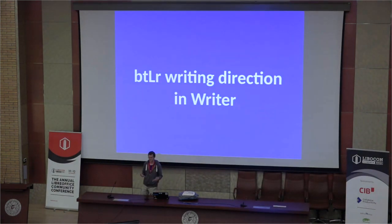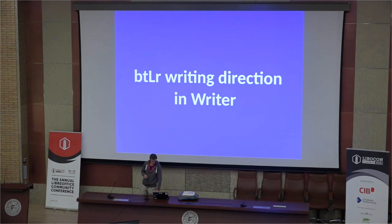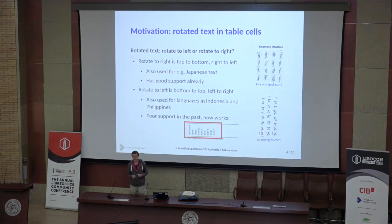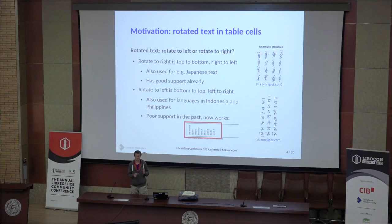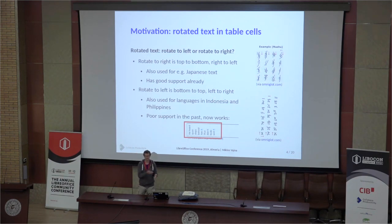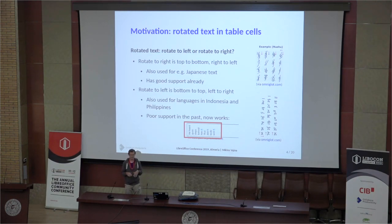For the purpose of this talk, I'm mostly working on things around Writer. The way it looks for Latin text: we normally start at the top left corner of a page and write to the right. Once one line is full, we go down and again start from the left, writing towards the right edge. This is typical for Latin text, but for other scripts it's different.